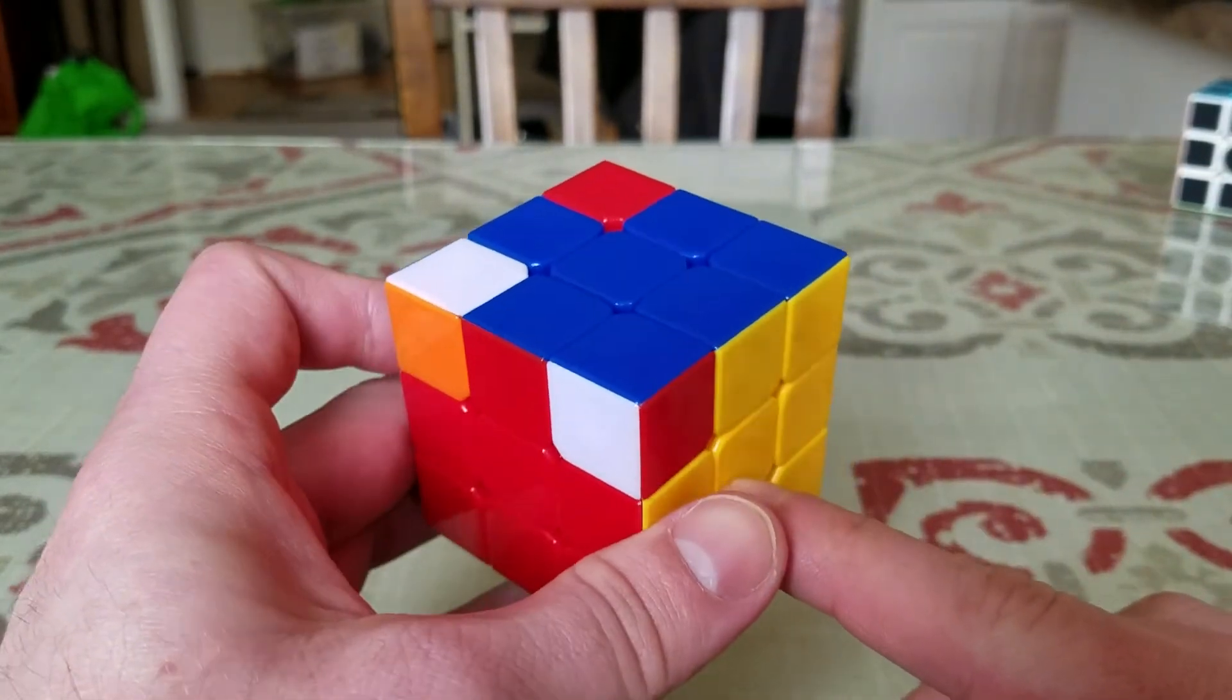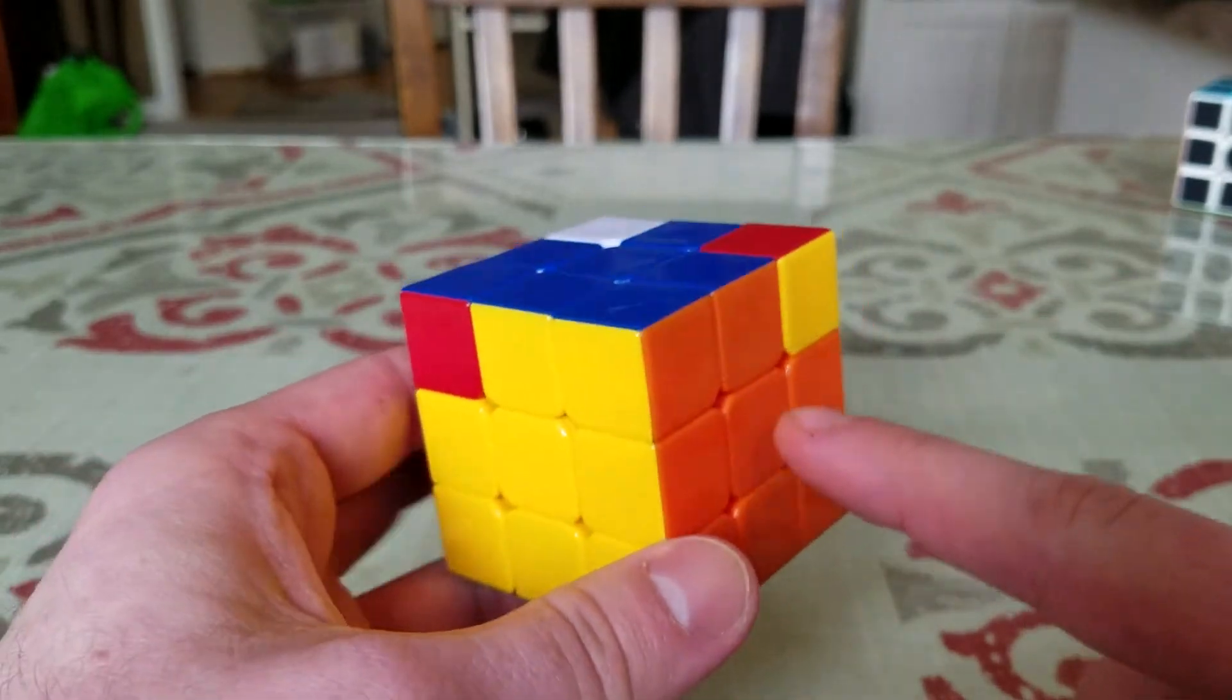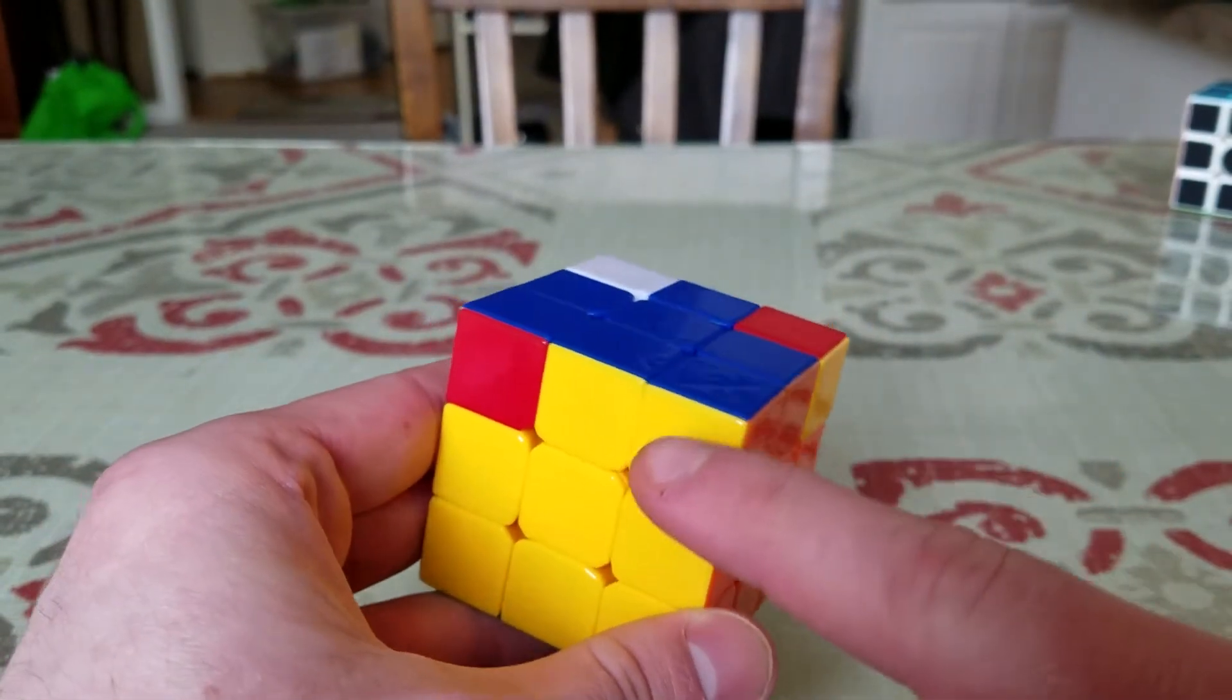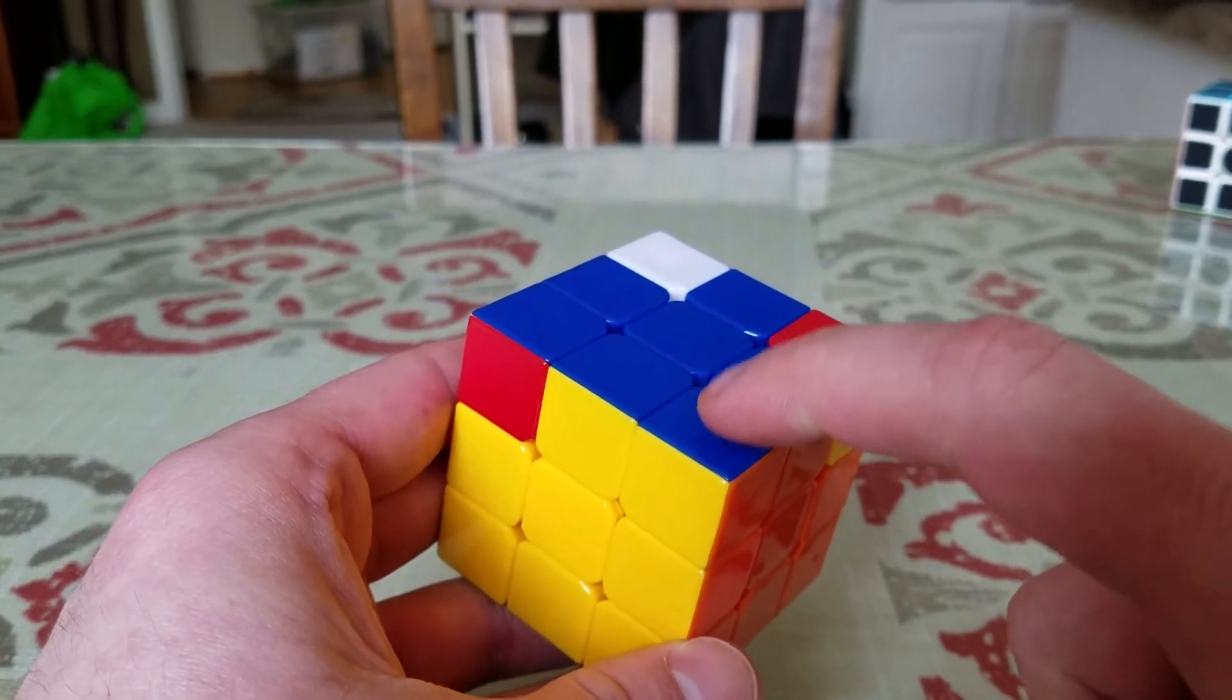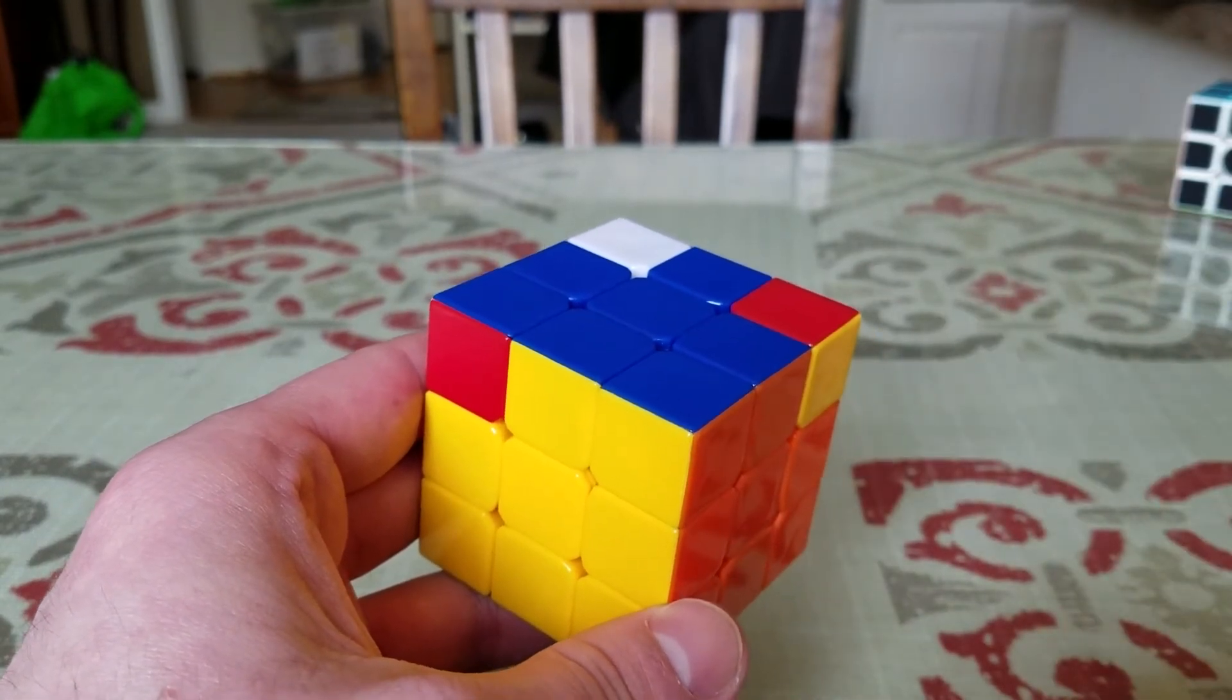What we want to make sure is that the corners are in the right spot. Now you can see here that this orange, yellow, and blue corner is in the correct spot. It actually happens to also be oriented correctly, but that's not important for this step.